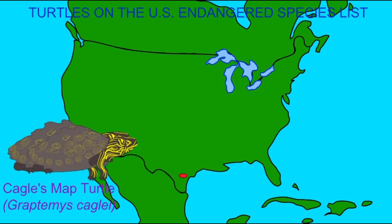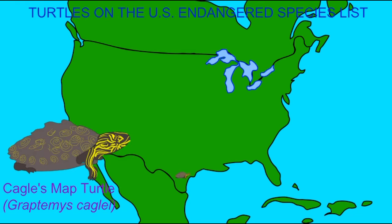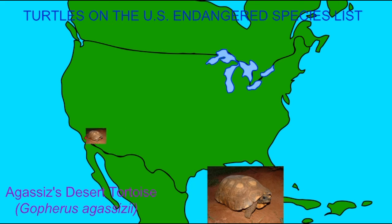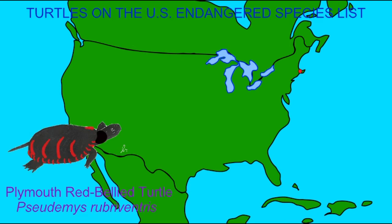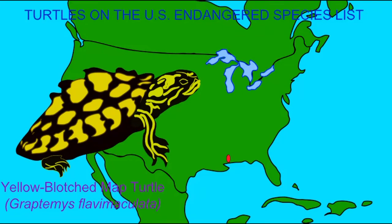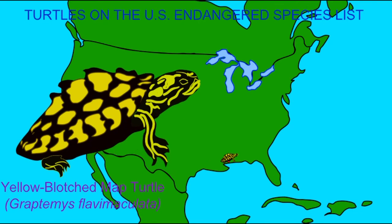Many other turtles are found in only small geographic areas, in one or a few related river basins. Habitat change, whether through agriculture or the introduction of new species in very small specific areas, can have devastating effects on these turtles.